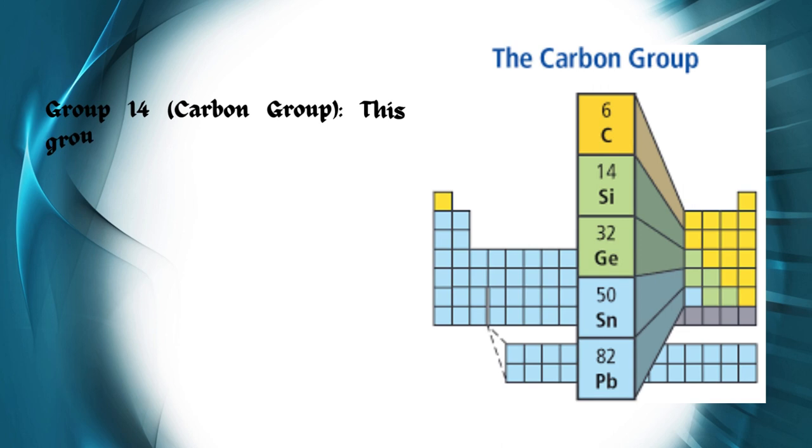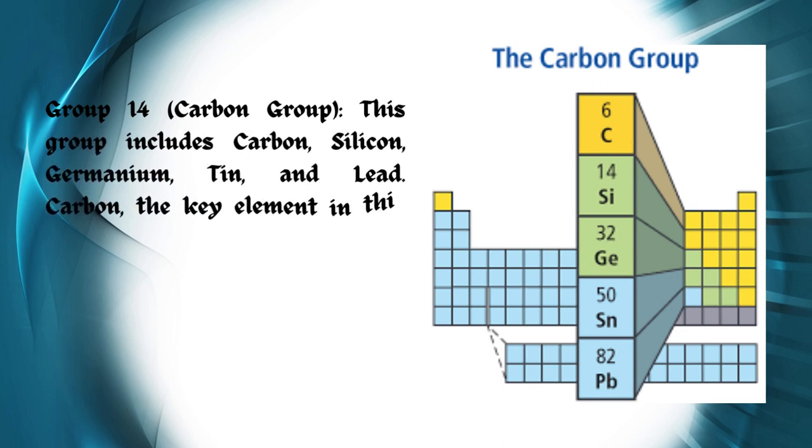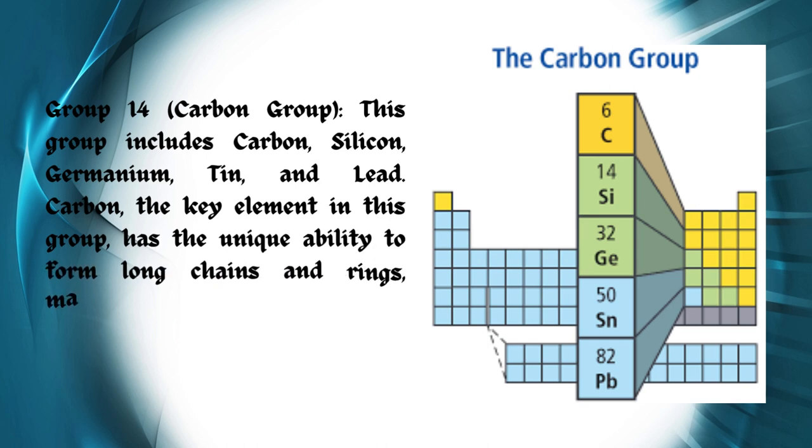Group 14, Carbon Group: This group includes carbon, silicon, germanium, tin, and lead. Carbon, the key element in this group, has the unique ability to form long chains and rings, making it the basis of all organic compounds.